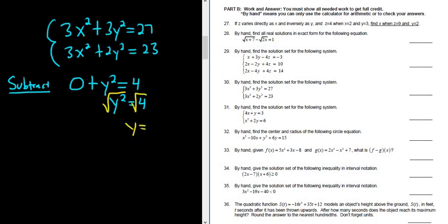And whenever you take the square root of a variable squared, it's really important to put a plus or minus. So we get plus or minus 2. So these are the y coordinates of the answers.